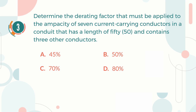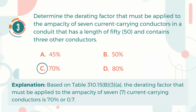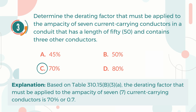The correct answer is C. 70%. Explanation: Based on Table 310.15(B)(3)(a), the derating factor that must be applied to the ampacity of 7 current-carrying conductors is 70% or 0.7.